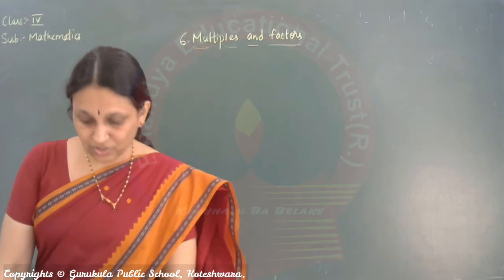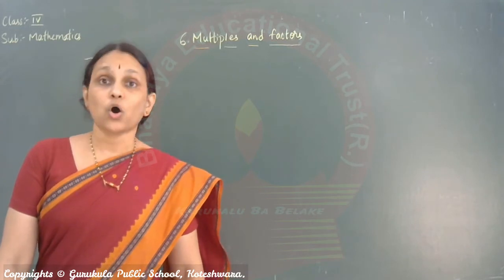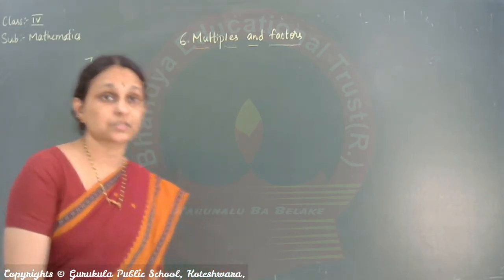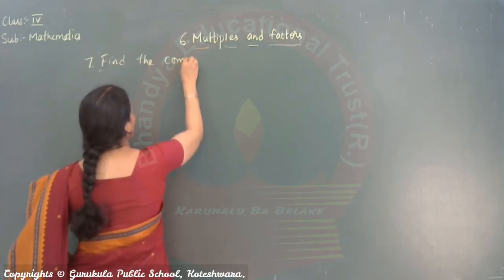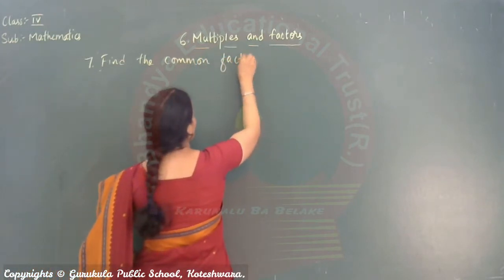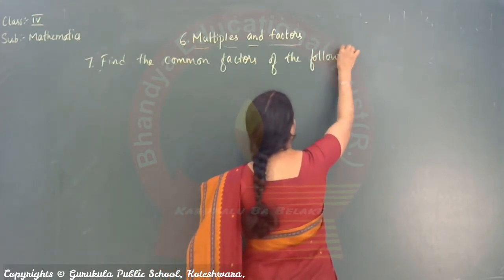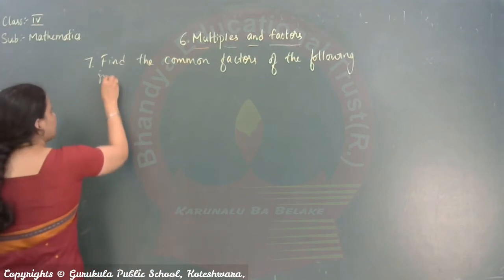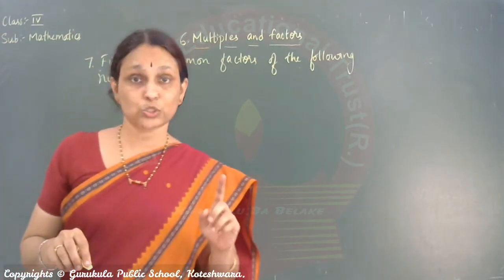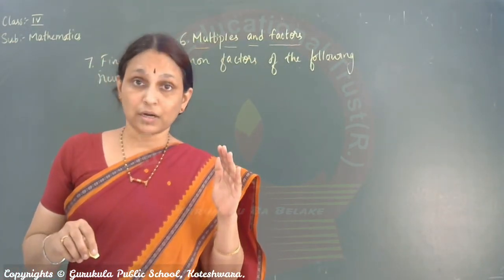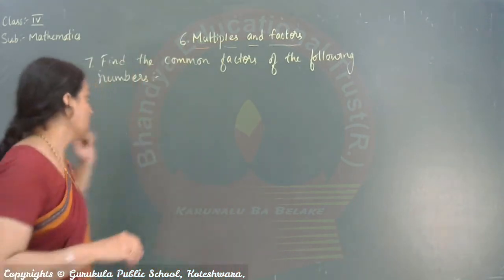Go to page 132. It says find the common factors of the following numbers. I have told you many times you have to read the question also. You should know how to read the question also. Many a times you don't understand maths because you don't understand the question. Now, first one.